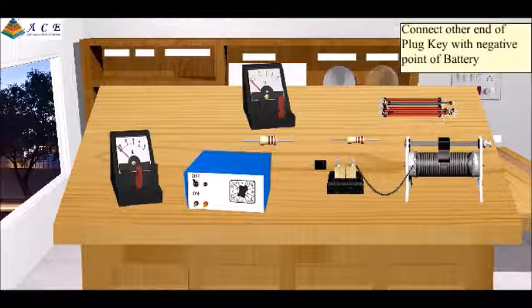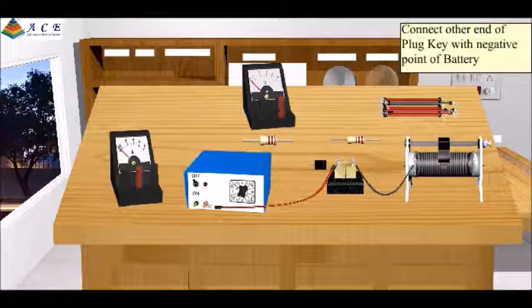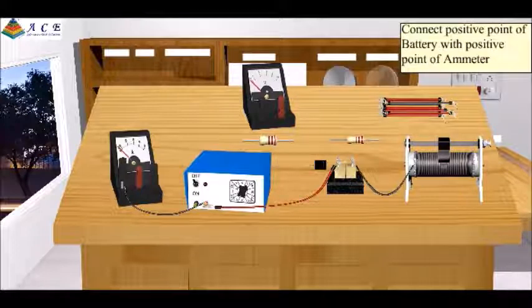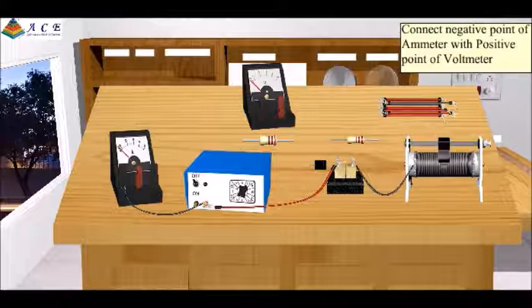Connect the other end of the plug key with the negative point of the battery. Connect the positive point of the battery with the positive point of the ammeter. Connect the negative point of the ammeter with the positive point of the voltmeter.